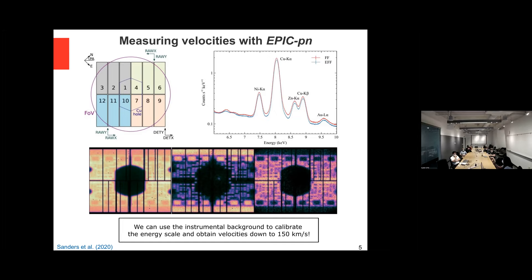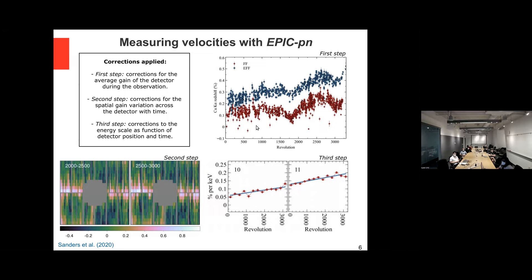The calibration is improved to 150 kilometers per second, compared to the nominal calibration of around 600–700 km/s — quite an improvement. The calibration is done over the lifetime of the telescope in three steps: correction over time, a spatial correction in the detector, and the energy calibration scale. Because of the copper hole, you cannot improve the energy calibration scale in the center, so if you want to apply this to an astronomical object you need to do offset observations, which is what we did.